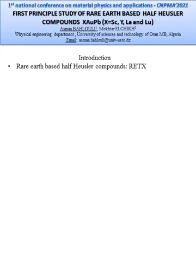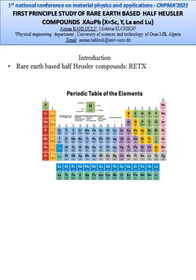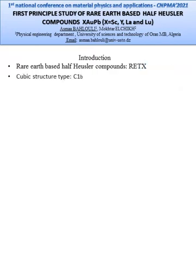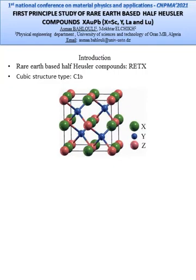Rare earth-based half-Heusler compounds are a class of ternary compounds that has attracted great attention in recent years, with interesting electronic and magnetic properties. Cubic XYZ compounds with C1b structure crystallize in a zinc-blende structure type.